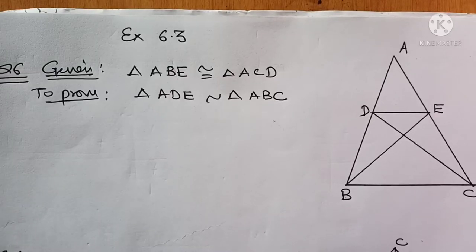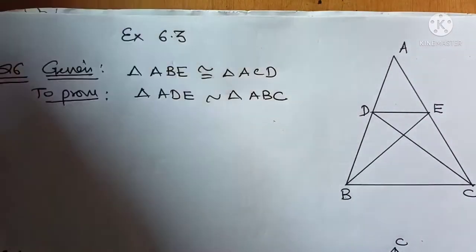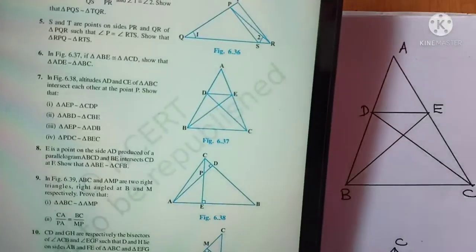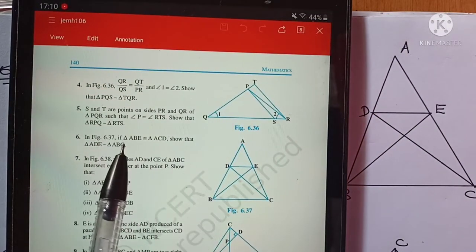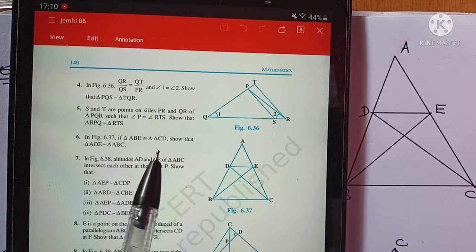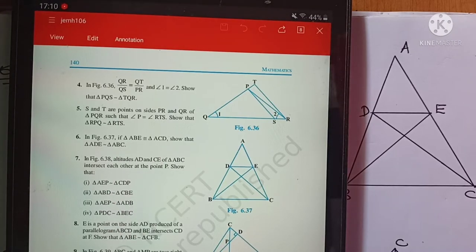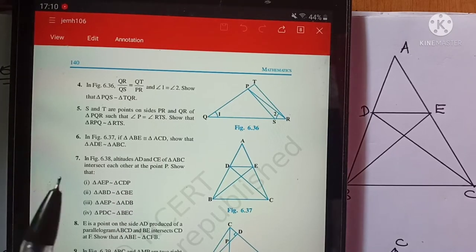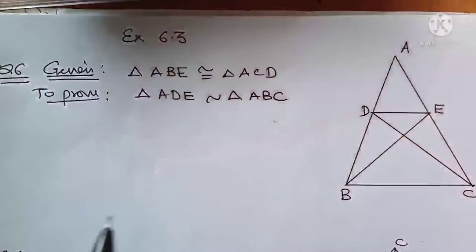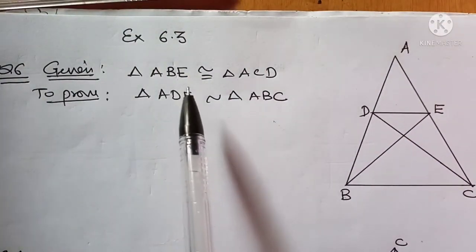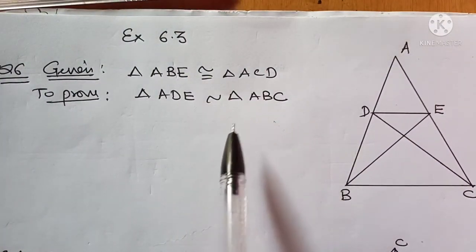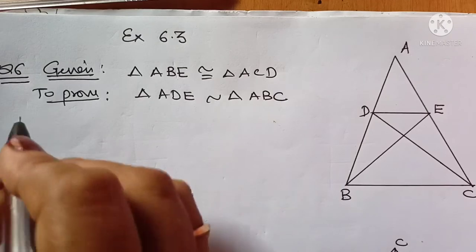Let's take up Exercise 6.3, Question Number 6. We are given that triangle ABE is congruent to triangle ACD, and we have to show that triangle ADE is similar to triangle ABC. The proof is quite direct. Let us see the proof.